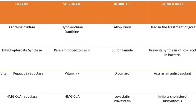Coming to examples and applications of competitive inhibition. Some important drugs include allopurinol, sulfonamides, dicoumarol, and lovastatin — all of which act by using the competitive inhibition mechanism. Allopurinol is used in the treatment of gout; sulfonamides are antibiotics; dicoumarol is an anticoagulant; and lovastatin is a drug used to inhibit cholesterol biosynthesis. To reduce uric acid levels in gout, allopurinol is used. The actual substrates for xanthine oxidase are hypoxanthine and xanthine. When allopurinol is given, it binds with the active site of xanthine oxidase and prevents the binding of hypoxanthine or xanthine, so xanthine cannot be converted into uric acid, thereby reducing uric acid production.